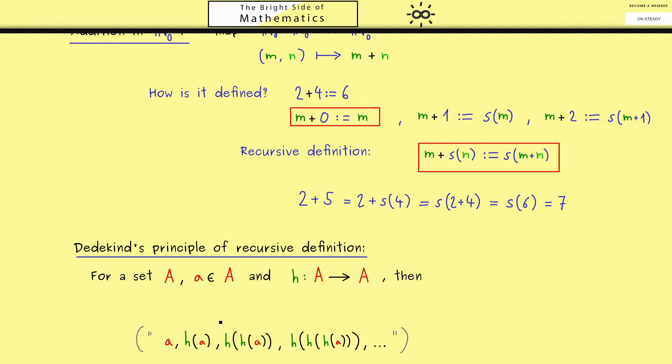In order to put this into a precise form, we would say there exists a map from the natural numbers into A. We call it f, and there is only one such map. Now if we put in the number 0, we get out a. And if we put in the successor of a natural number n, we just apply h one more time, so it should be h(f(n)).